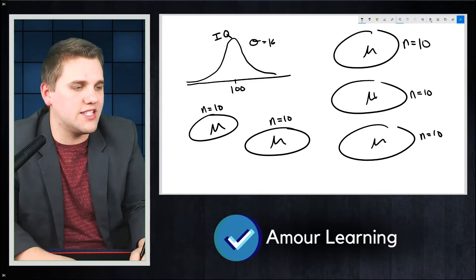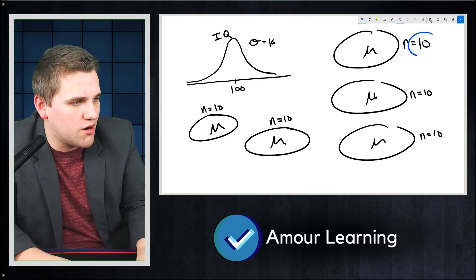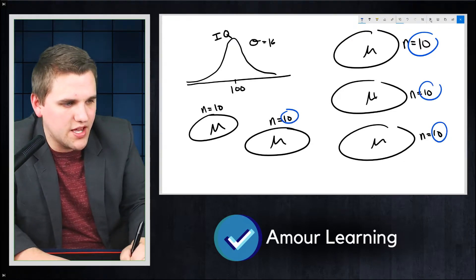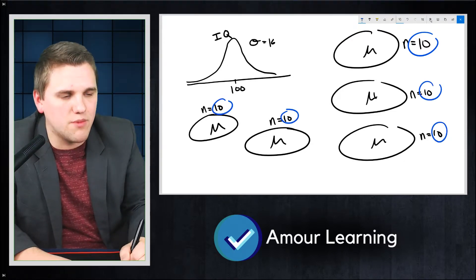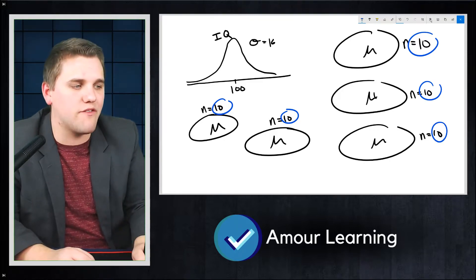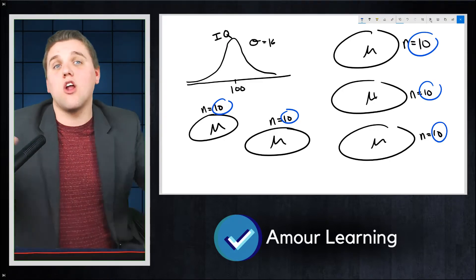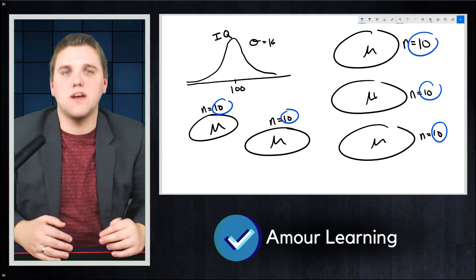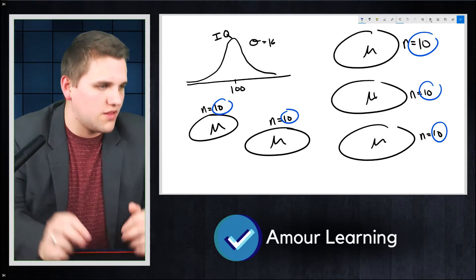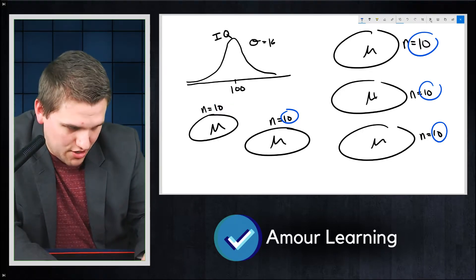The larger the sample sizes, the more the distribution becomes normal or bell-curve-shaped. As we make these sample sizes bigger — and again, they all have to be the same — if we make them, say, 20, then the corresponding averages would get not only closer together, but they would be more normally distributed. So that's what the central limit theorem says.